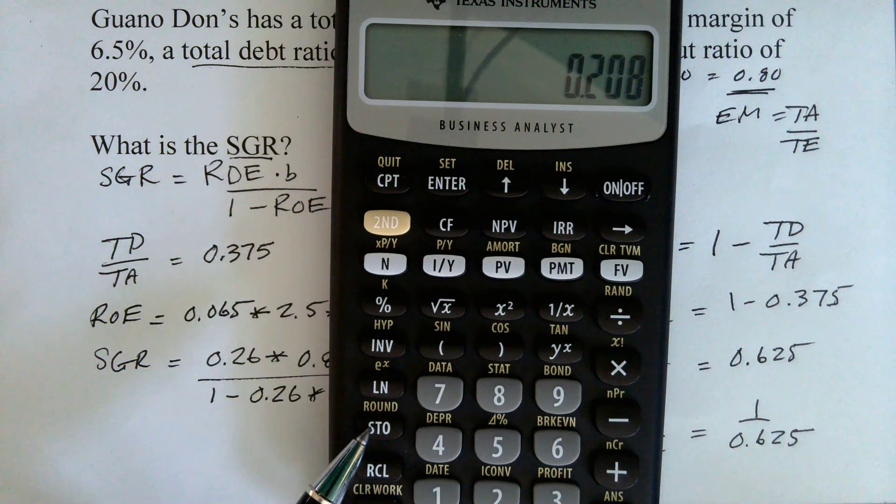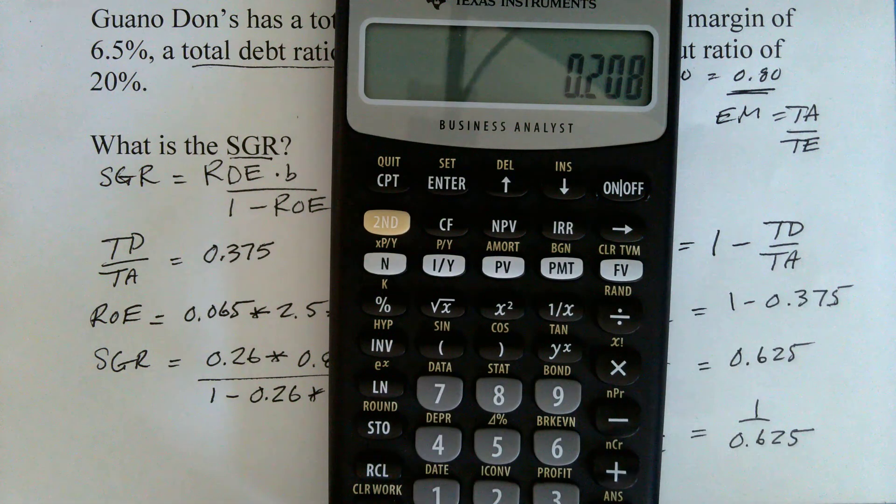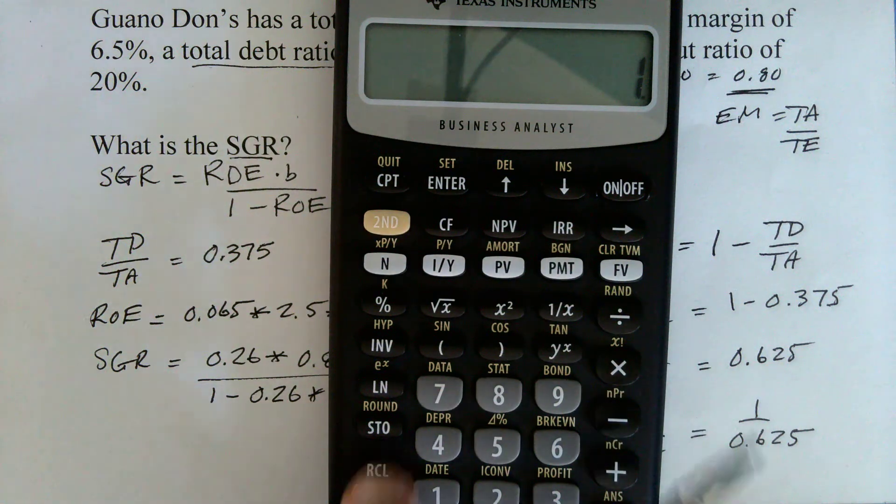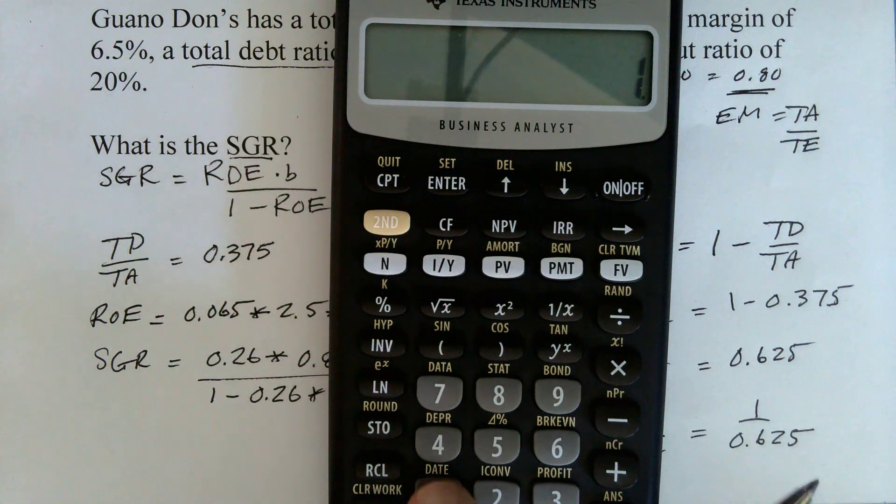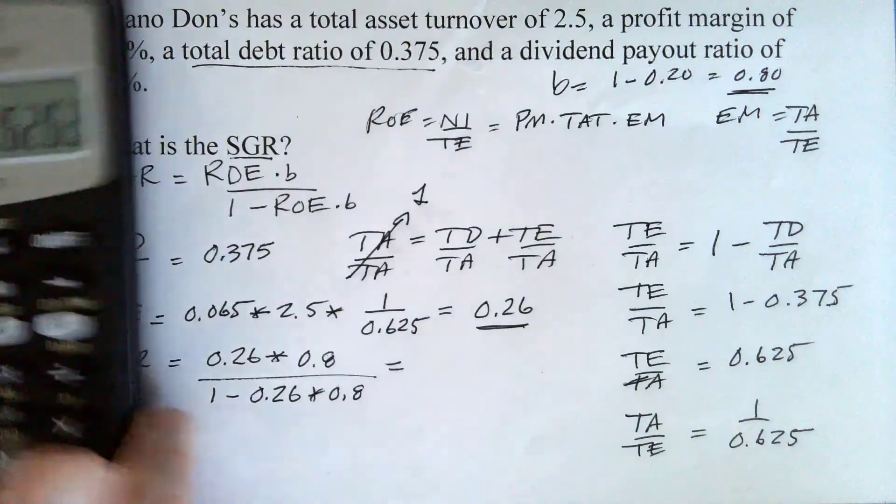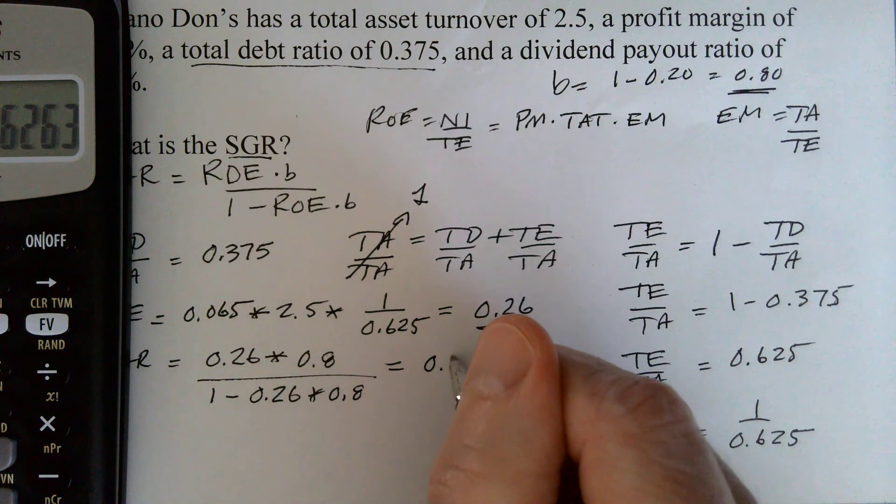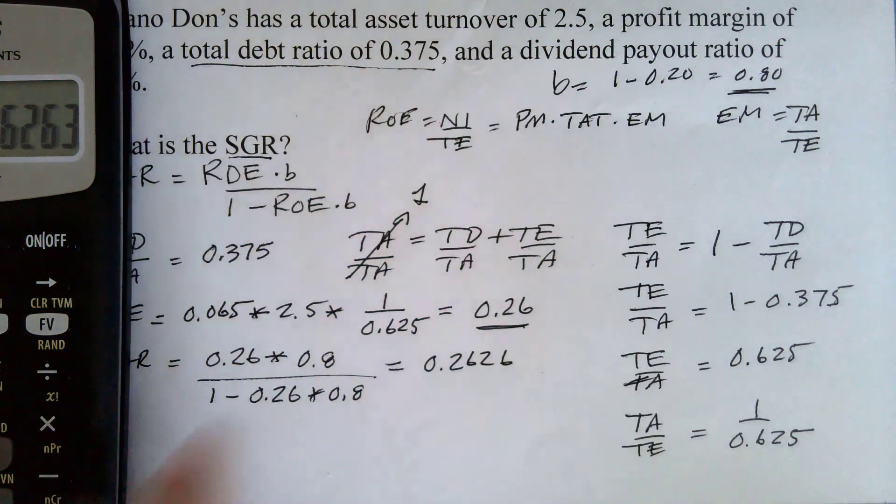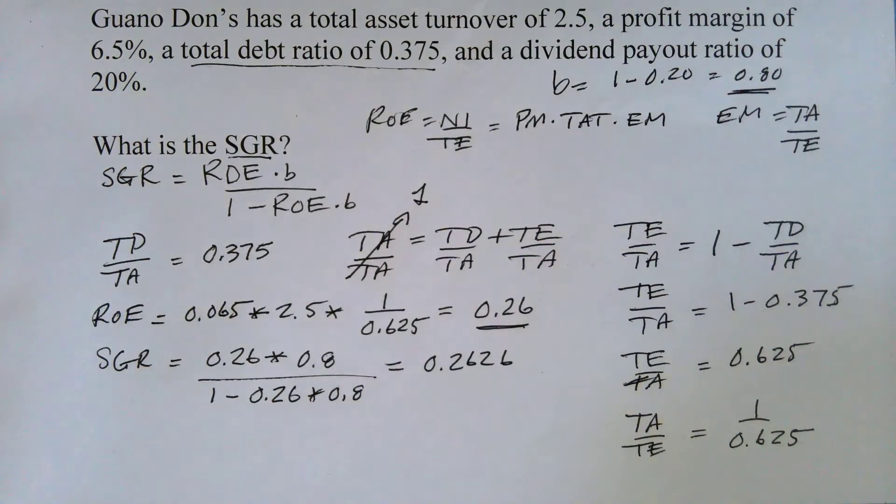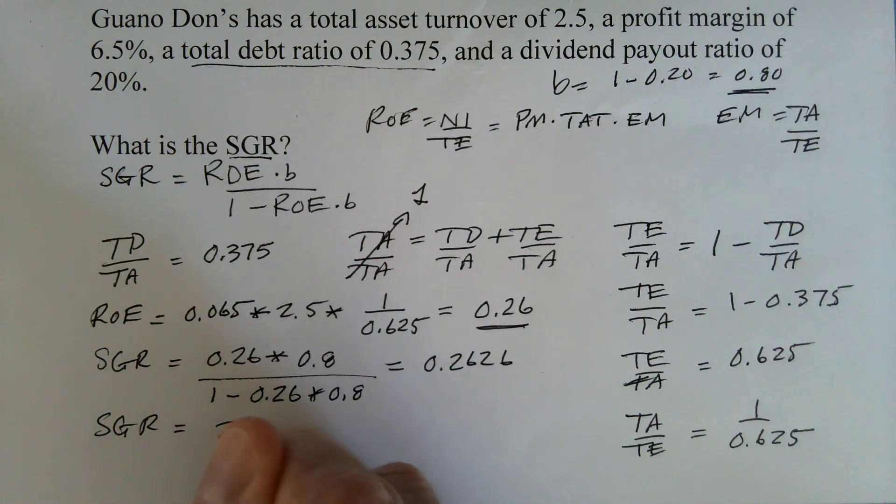And I'm going to store 1. I hit STO and 1. And then I'm going to say divide by, open parenthesis, 1 minus, recall 1, close parenthesis, equals. And so our SGR would be 26.26%.